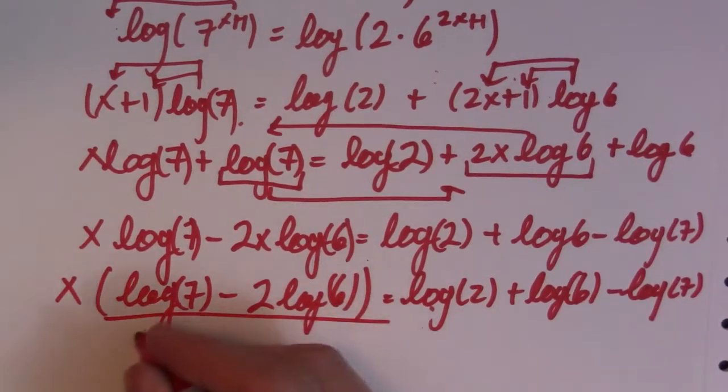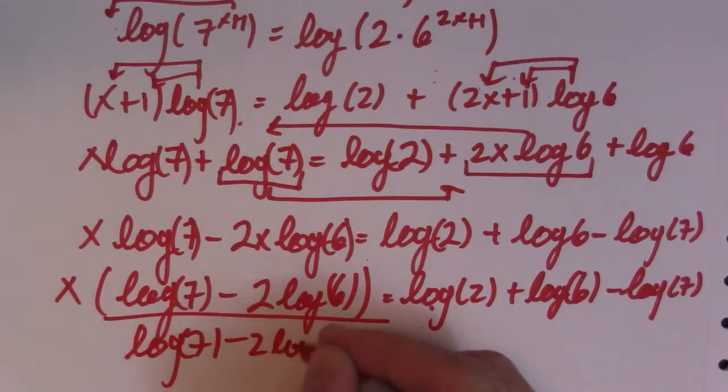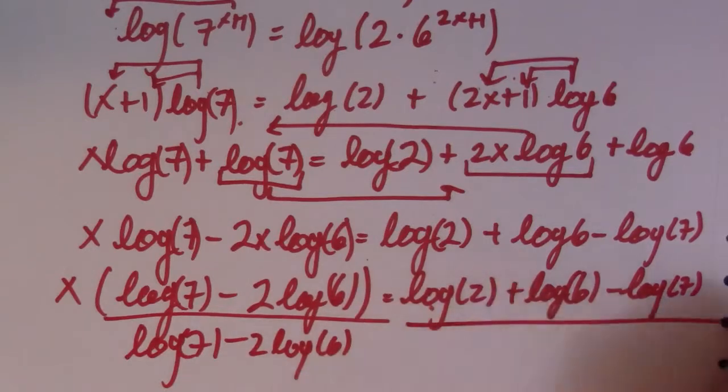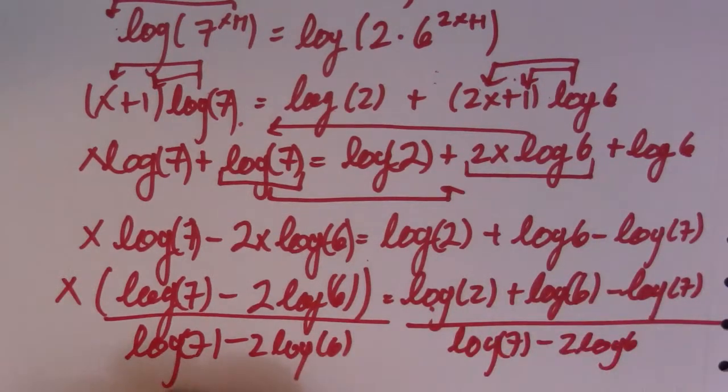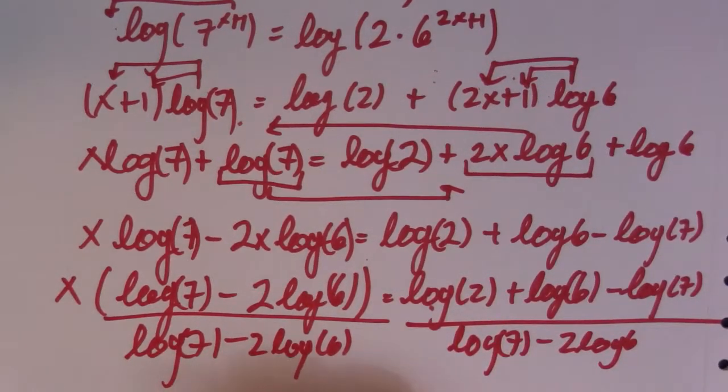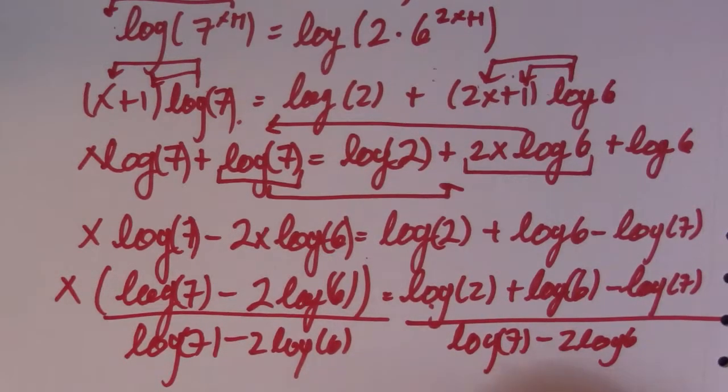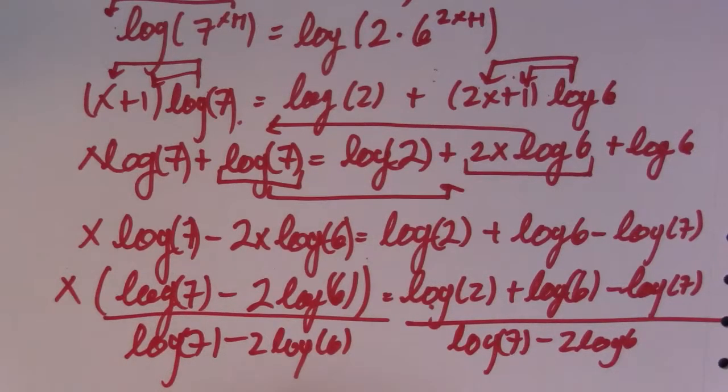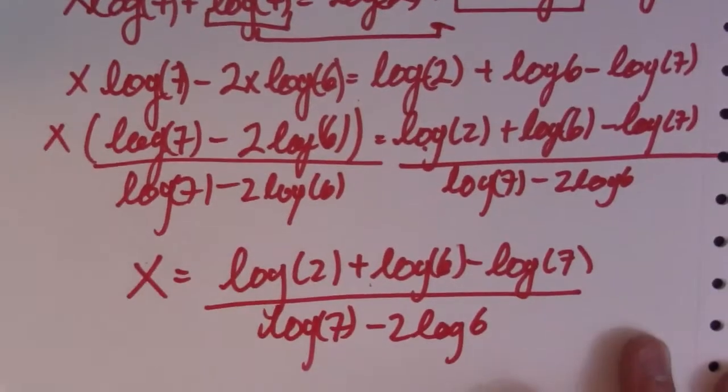So then, what's in brackets here? And divide both sides by that. So we have three terms on this side. So log of 7 minus 2 log of 6. So you're left with x is equal to log of 2 plus log of 6 minus log of 7. I'll divide it by log of 7 minus 2 log of 6. So quite the complicated mess there.